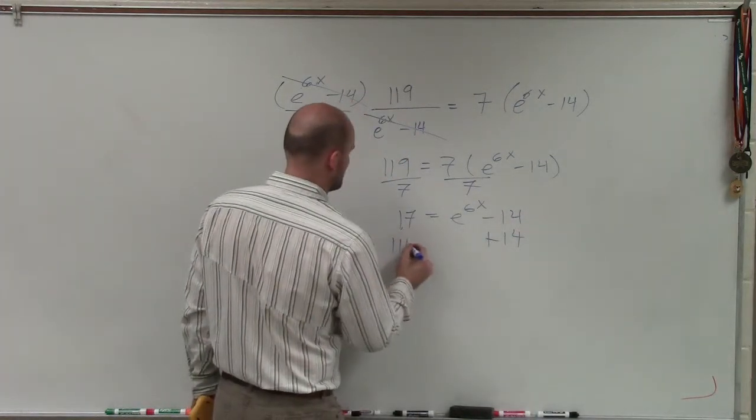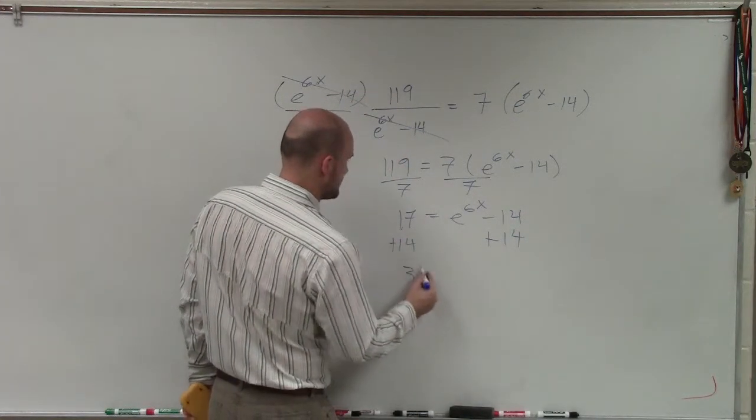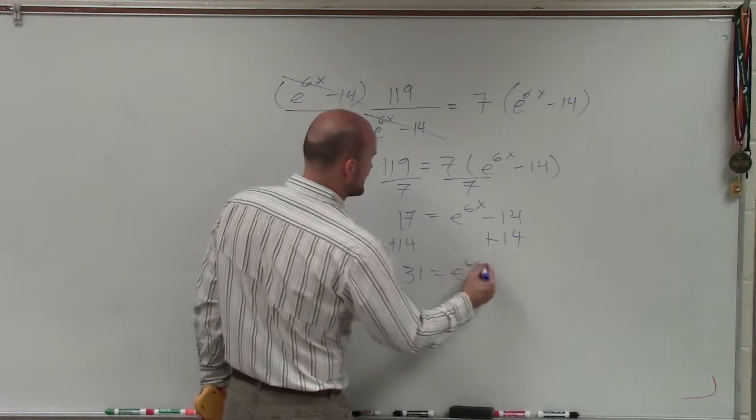Now I'll add 14 on both sides. Therefore, that's going to be 31 equals e to the 6x.